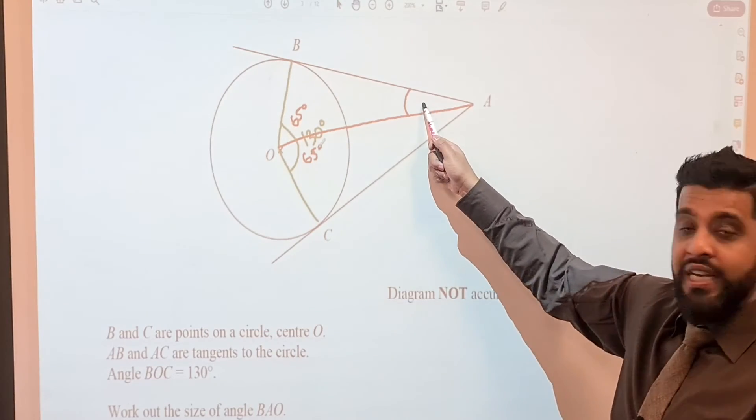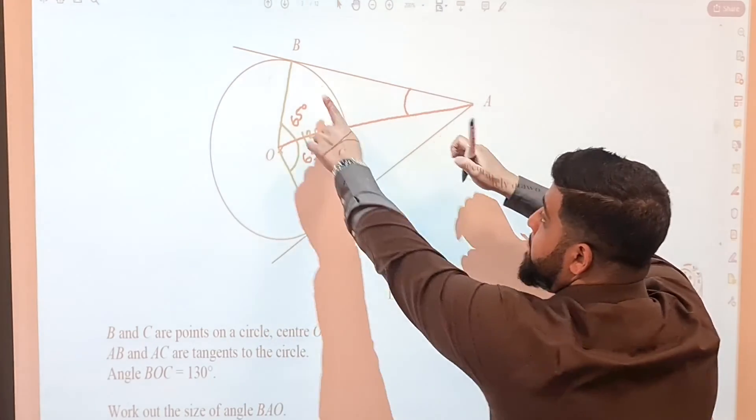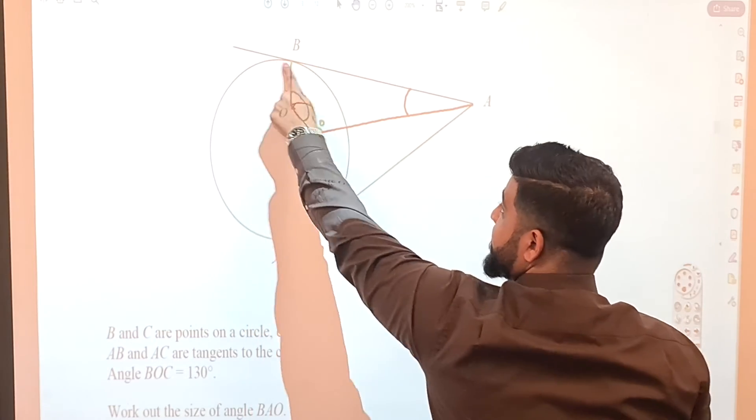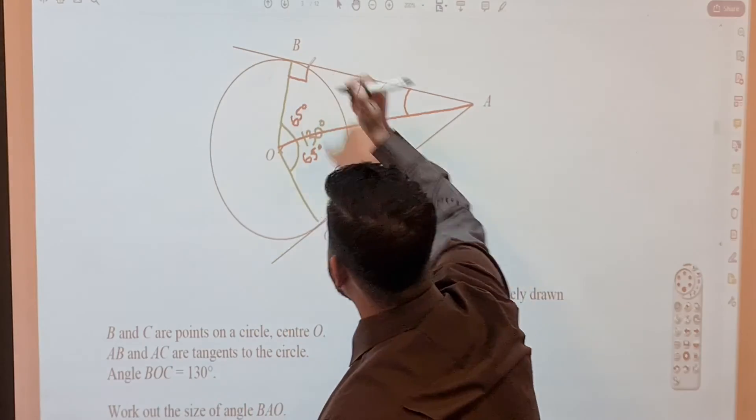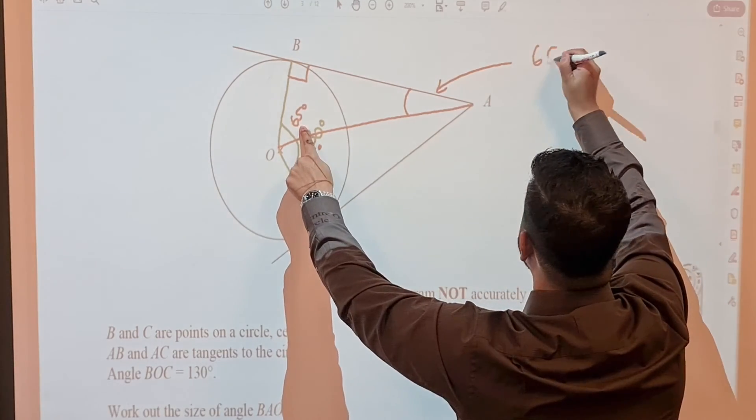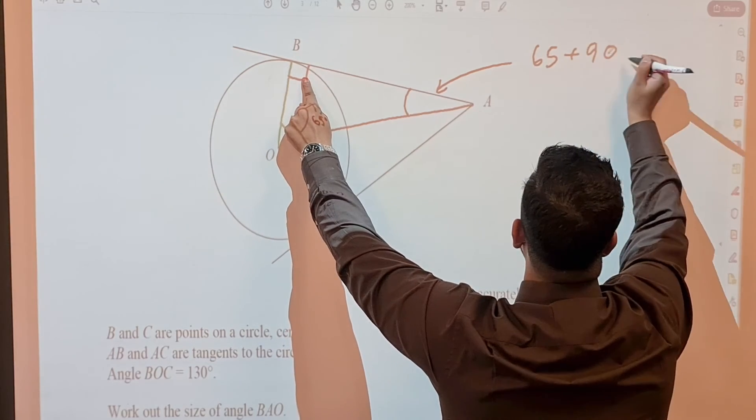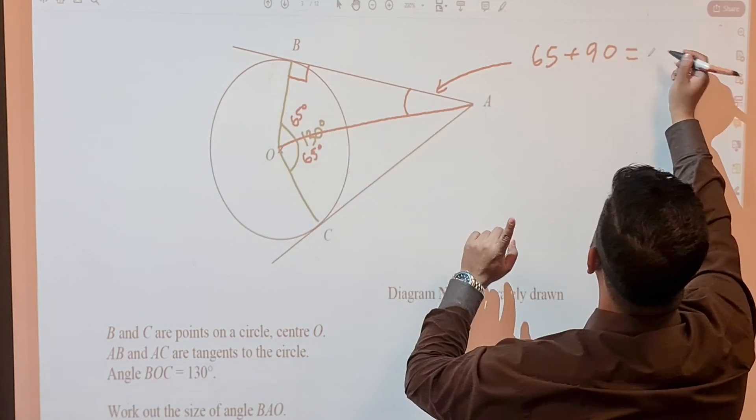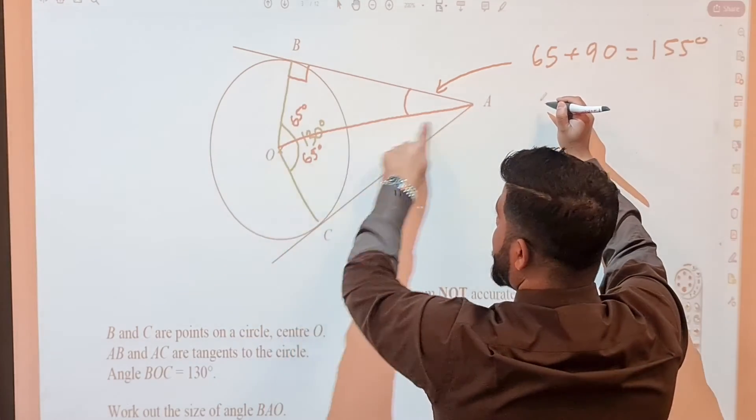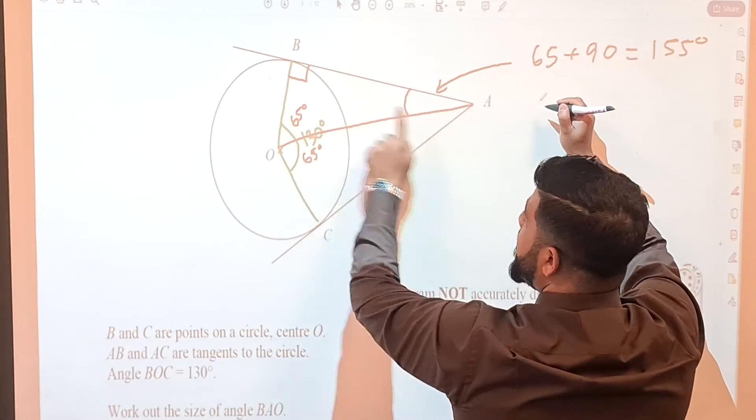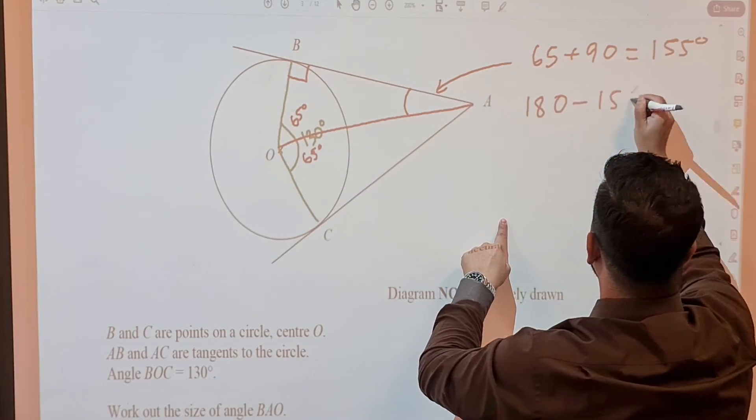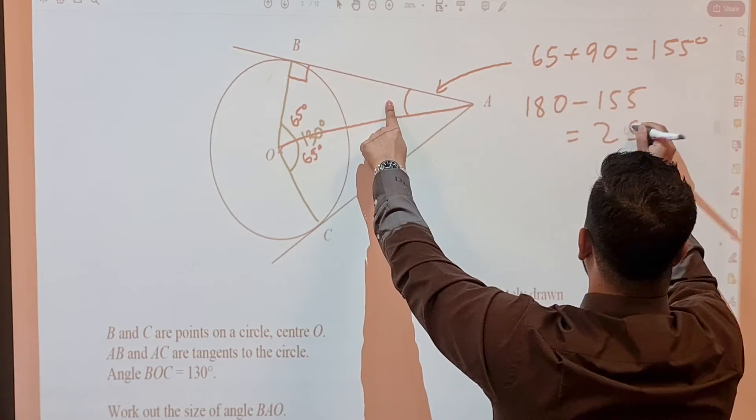Now we are told to find this angle, so let's focus on this triangle here. Do we know this angle here? Yes, we do. Because this is a radius and this is a tangent, this is 90 degrees. So all that leaves us to do is to find this angle. We do 65 plus the 90, get the total of that which is 155 degrees, and then take it away from 180 because angles in a triangle add up to 180. So therefore 180 take away 155, and that gives us 25 degrees. So therefore angle BAO is equal to 25 degrees.